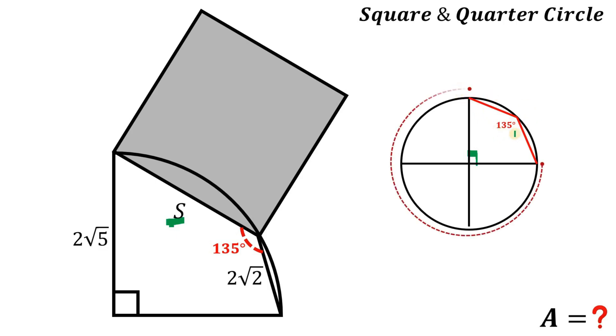So 270 degrees divided by 2 is just 135. Using inscribed angle theorem, whenever we put this angle it is always 135 degrees. Now let's use this information to find the value of s. Let's extend the side of the square like this and draw a right angle like this.